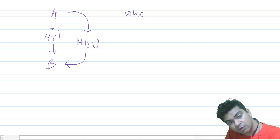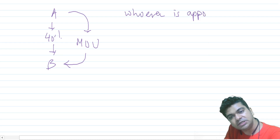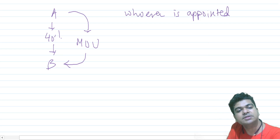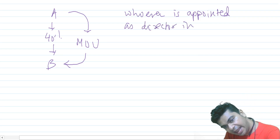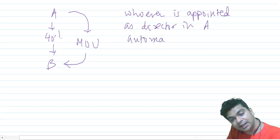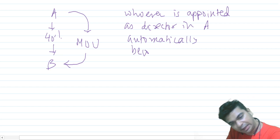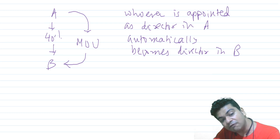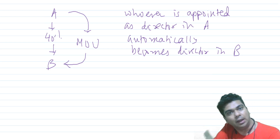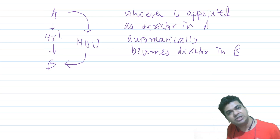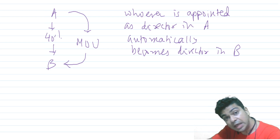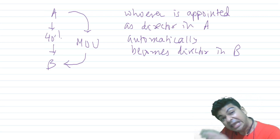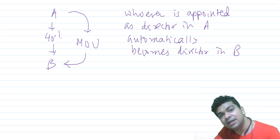Under this MOU, whoever is appointed as director in A automatically becomes a director in B. In that case, company A will control the composition of the board of directors of B. Whatever decisions B takes will be made by that board of directors, which is itself within the control of A. So even with only 40% shareholding, we can say that A is controlling B.